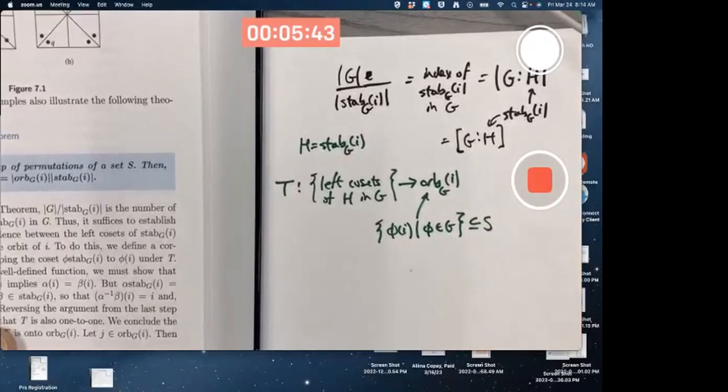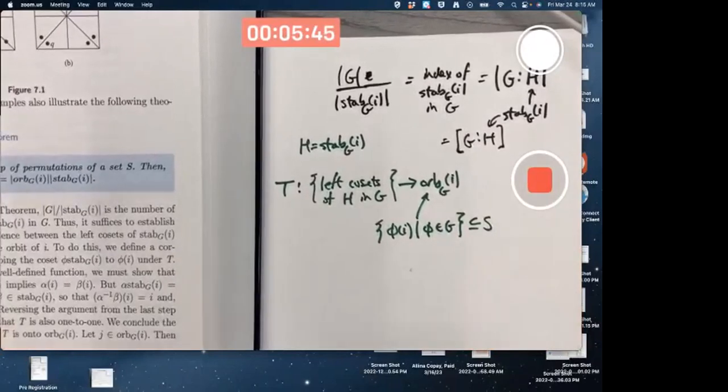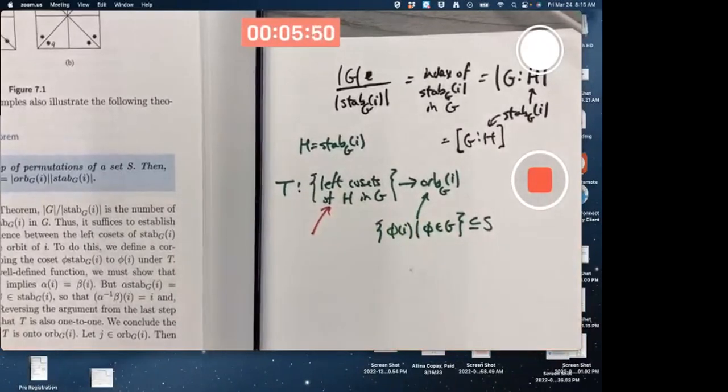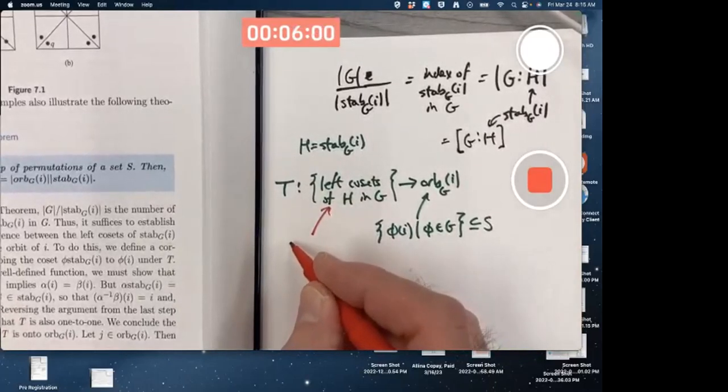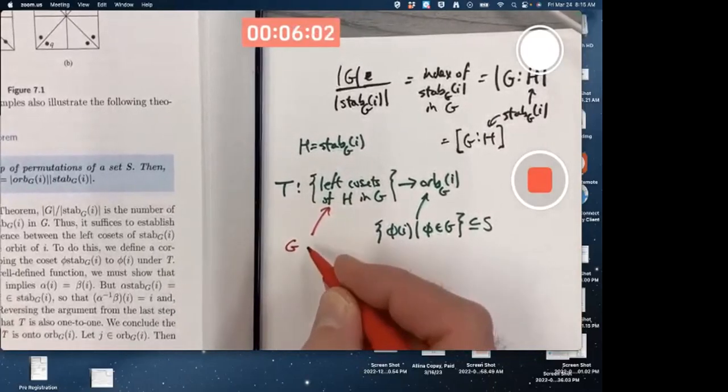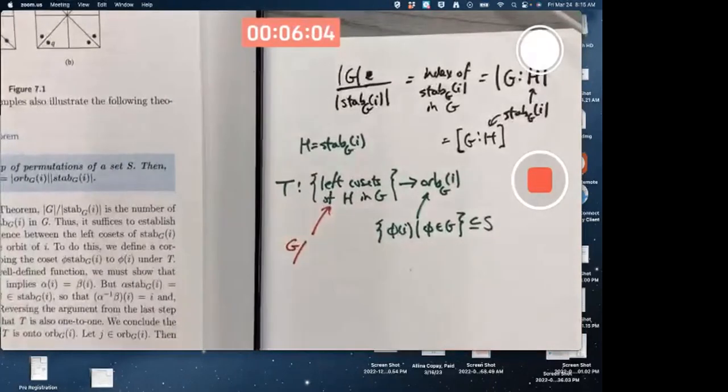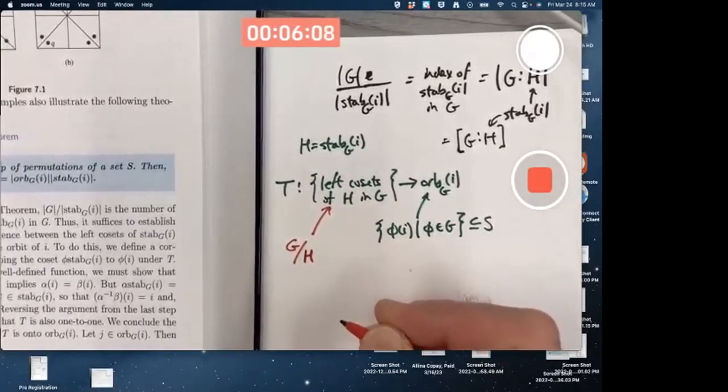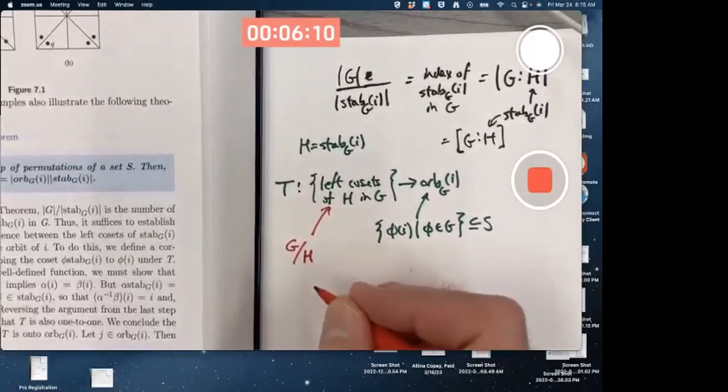This is actually also related to chapter 9 right here. That collection of left cosets, if you've read ahead into chapter 9, has a special symbol and a special name. The special symbol is you write it as a fraction. Quote, unquote, not really a fraction. G divided by H. You actually say more commonly G mod H.